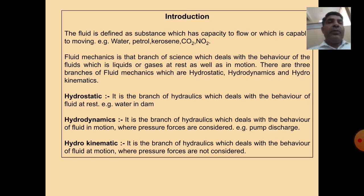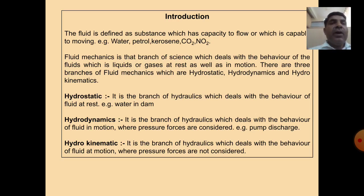First of all, we will discuss what is fluid, and also what is fluid mechanics. This is a very important topic for beginners. A fluid is a substance which is capable of moving or flowing. There are various examples of fluids — some are liquid types and some are gaseous types. Water and petrol are examples of liquid type; CO2 and NO2 are gaseous types.